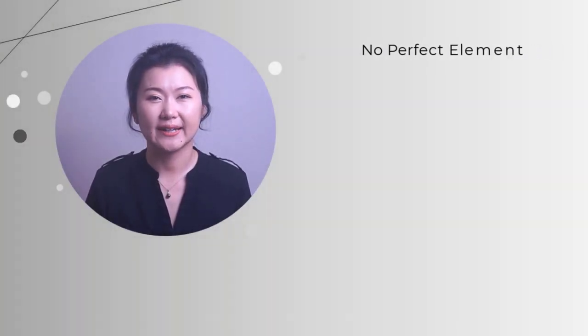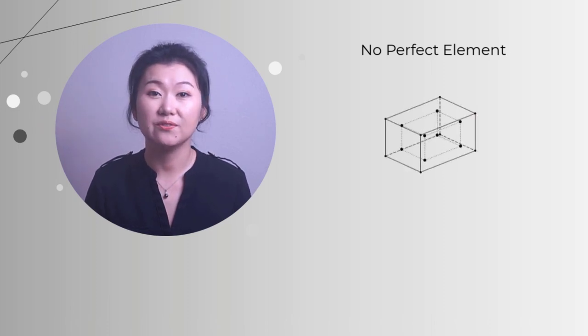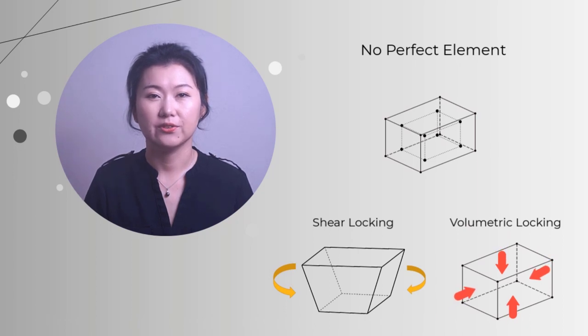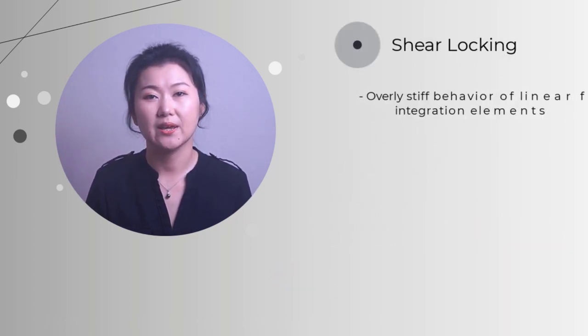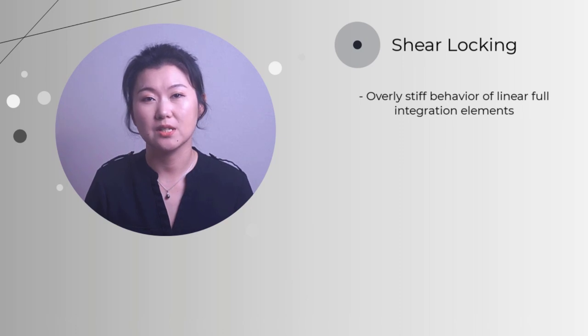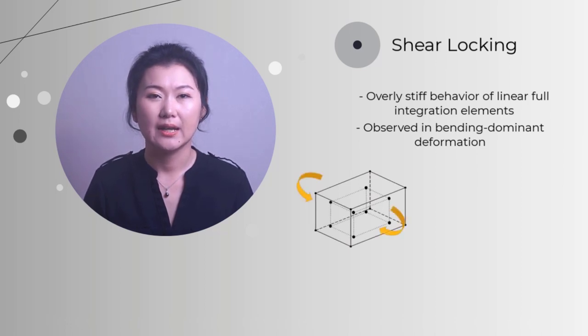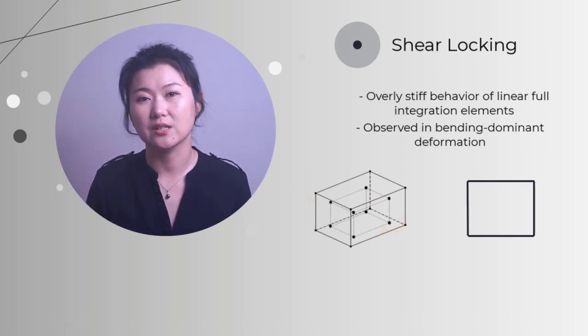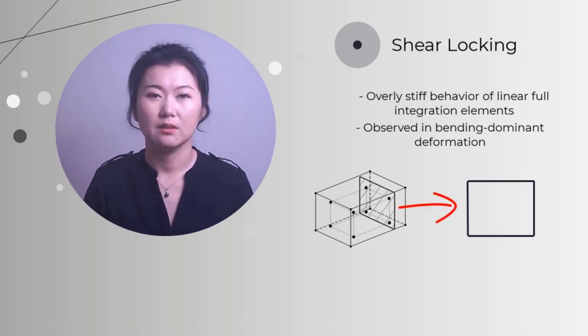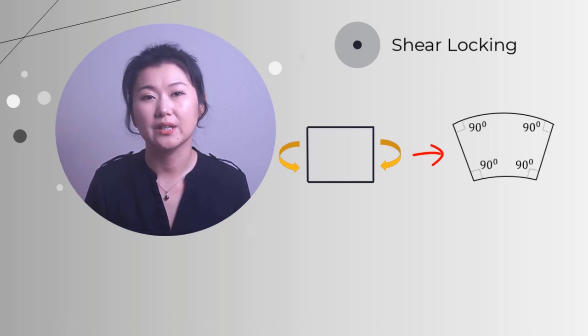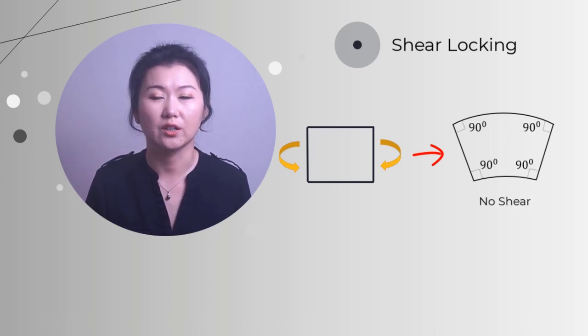So does it mean that full integration elements are always more accurate? Remember that there is no perfect element. In fact, linear hex element with full integration may face shear locking and volumetric locking errors. First of all, about shear locking, it's an overstiff behavior of linear full integration elements with bending dominant deformation. Consider a hex element under pure bending, and let's draw two horizontal lines and two vertical lines to represent the material's fibers passing through the four integration points. In reality, the two horizontal dashed lines will bend, and the angles between the vertical and the horizontal lines should remain 90 degrees, meaning that there is no shear over the cross-section.